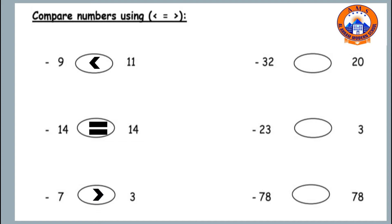So seven is greater than three. The next one is thirty-two and twenty. Yes, thirty-two is more than or greater than twenty.